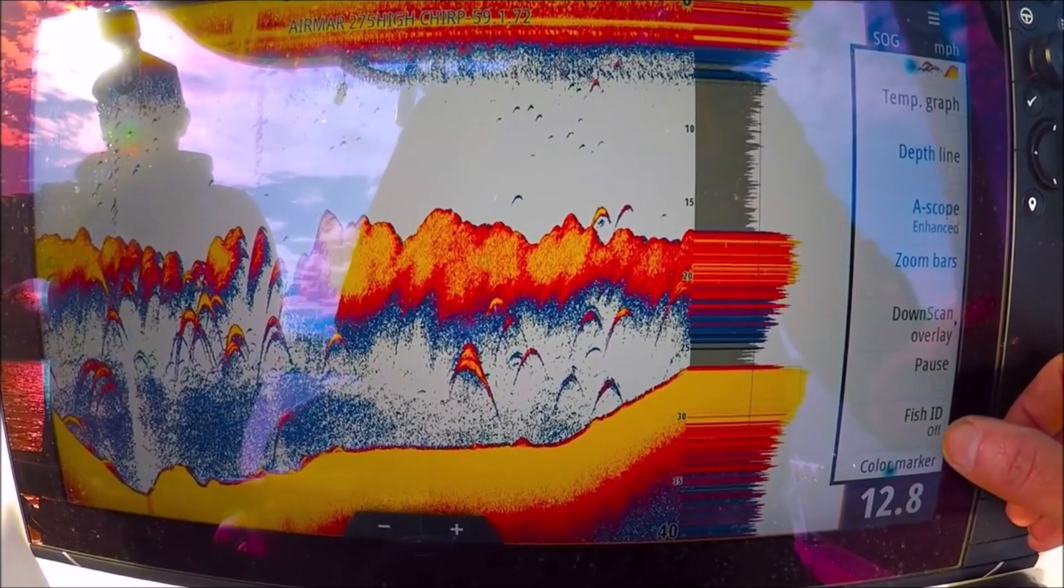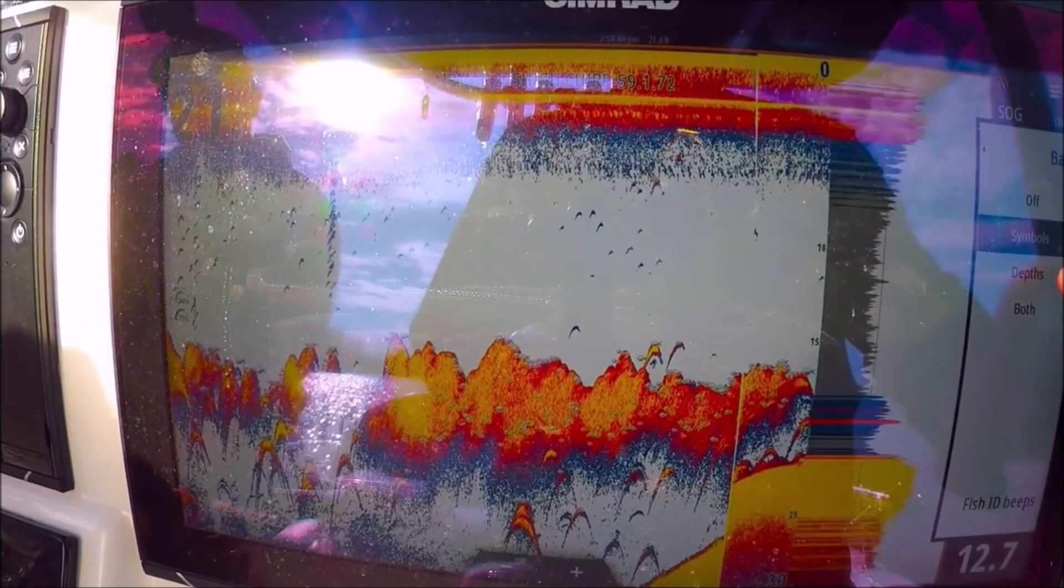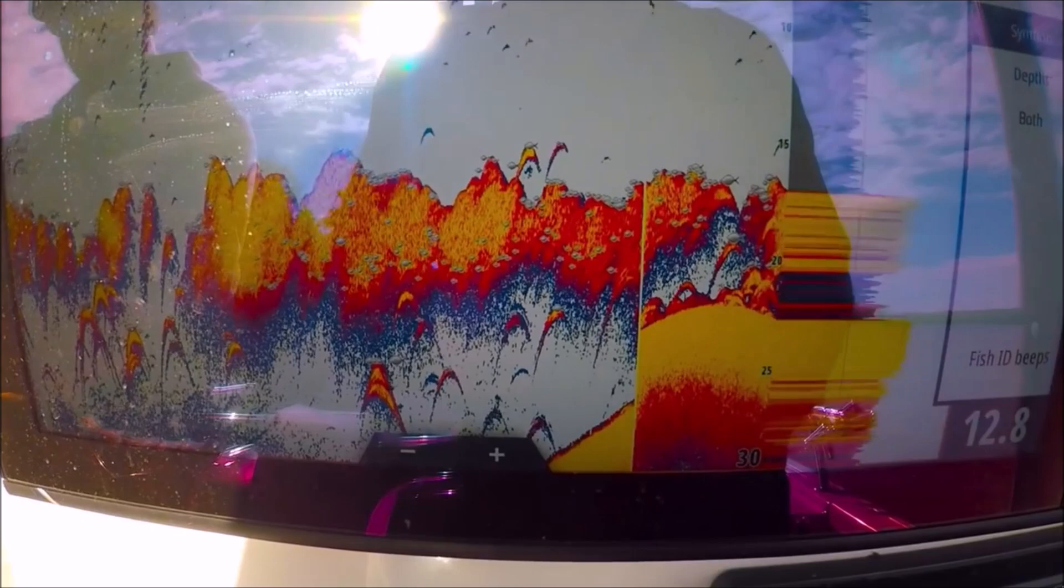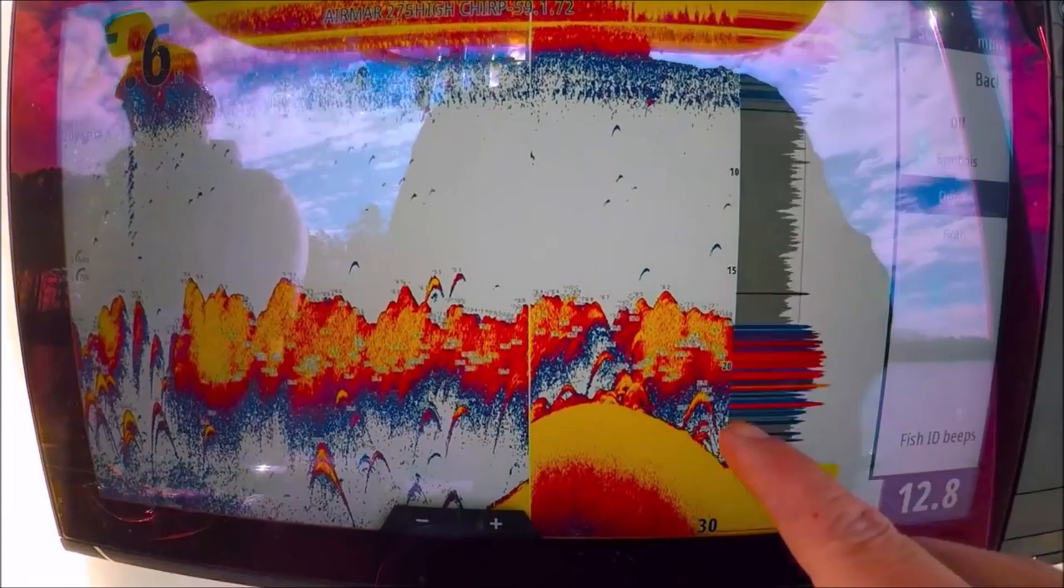Fish ID - off. Symbols - little fish symbols, you don't need that. Depth just puts a depth number at each mark. The symbols show the little fish here, but you don't need that really. Depth - you can see each return will have a number for the depth. Both is the fish symbols and the numbers. Let's turn that back off.